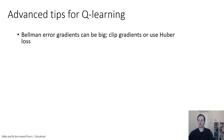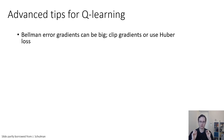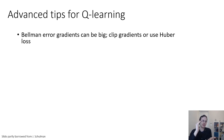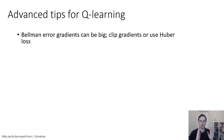A few more advanced tips for Q-learning. The gradients of the Bellman error can be very big — it's kind of a least squares regression, so squared error quantities and their gradients can be very large. If you have a really bad action, you don't really care about the value of that action, but the squared error objective really cares about figuring out exactly how bad it is. If good actions are around plus 10 and bad actions are minus one million, that minus one million will create a huge gradient even though you don't care that it's minus one million.